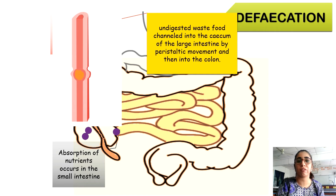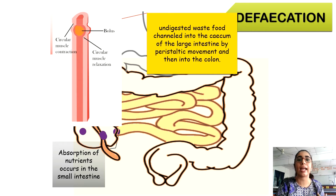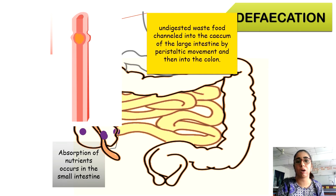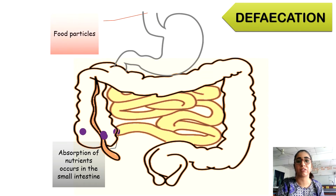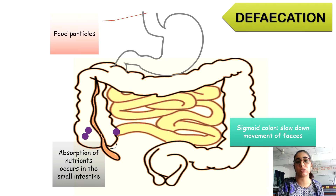The wall of the colon secretes mucus, which helps to bind the feces and lubricates the movement of feces along the colon. When the feces reaches the sigmoid colon, it has already solidified and dried. The sigmoid colon functions to slow down the movement of feces until it is time to be expelled.